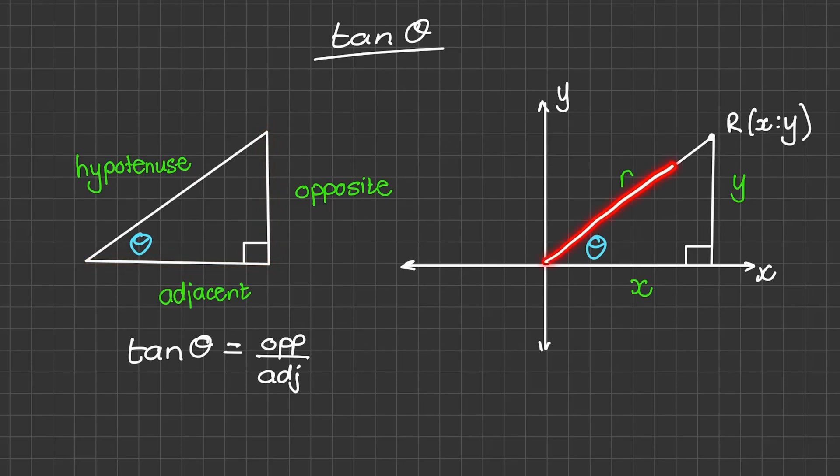And when the triangles are represented in the first quadrant, we can see that opposite is now represented by y, because it's opposite of theta, and the adjacent side is now represented by x. So in this example, tan of theta is equal to y over x.